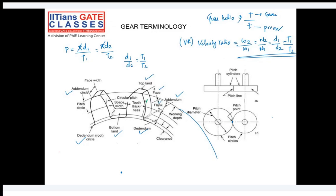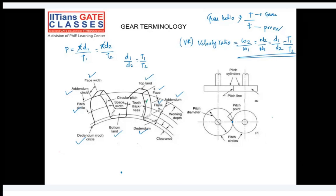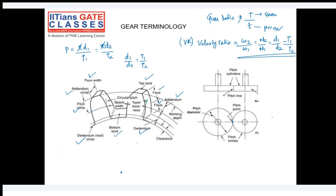Face width is the width of the tooth. Tooth thickness is the thickness of the tooth measured along the pitch circle. The spacing between two teeth is called the space width.